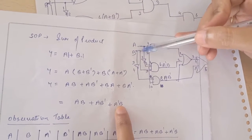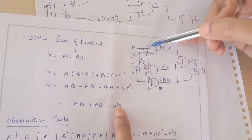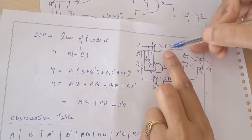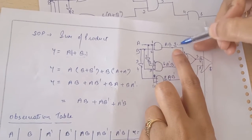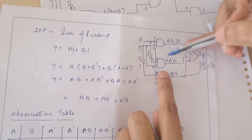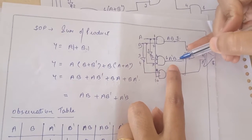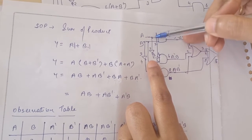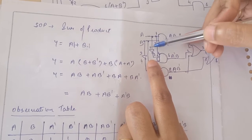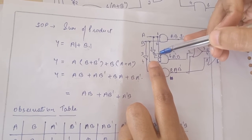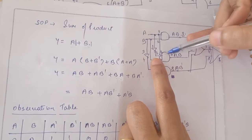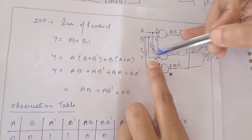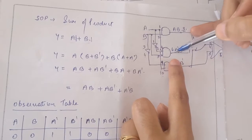The inputs A and B: input A is connected to pin number 1 of the AND gate and B is connected to pin number 2 of this AND gate. The output of this AND gate is A·B, obtained at pin number 3. For the second AND gate, we will have A-bar·B. To get A-bar, we use a NOT gate — input A goes to pin number 1 of this NOT gate and output is obtained at pin number 2. Then pin number 2 is connected to pin number 4 of this AND gate. Similarly, input B is connected to pin number 5 of this AND gate and output is obtained at pin number 6.